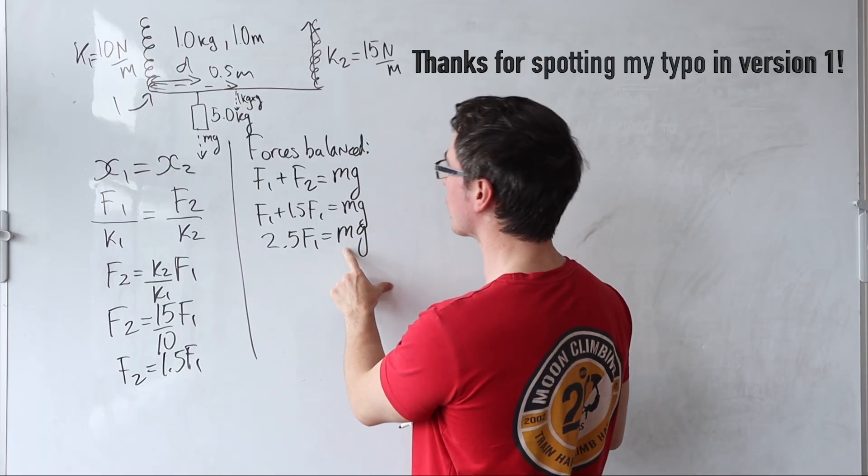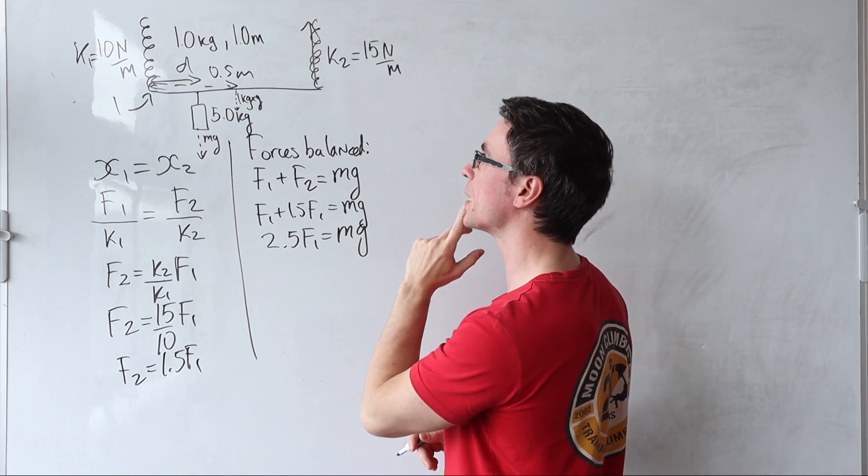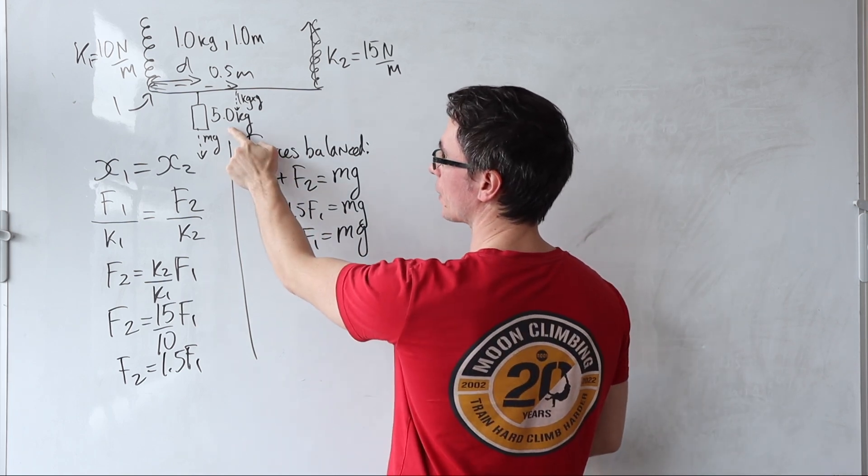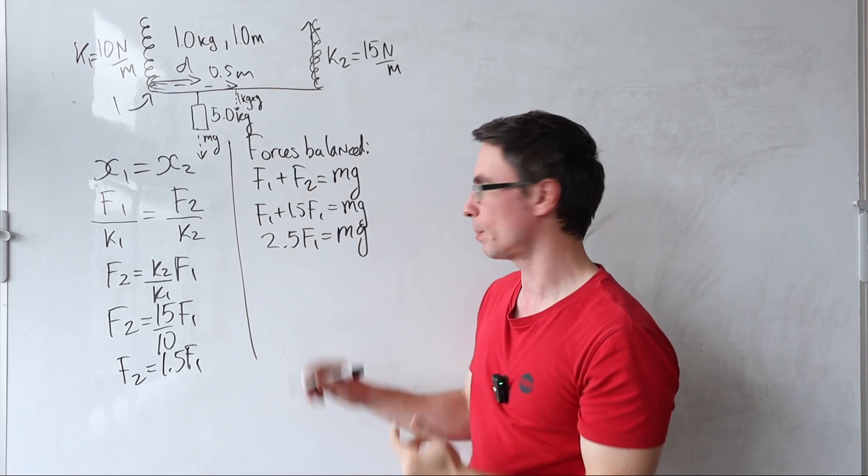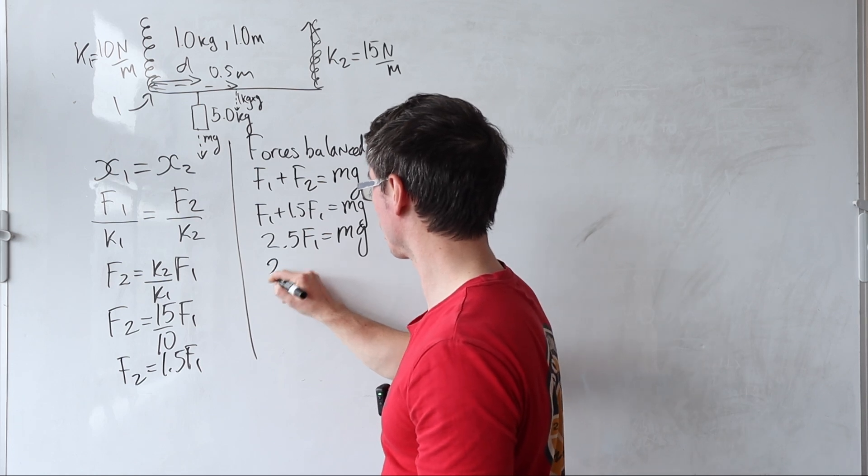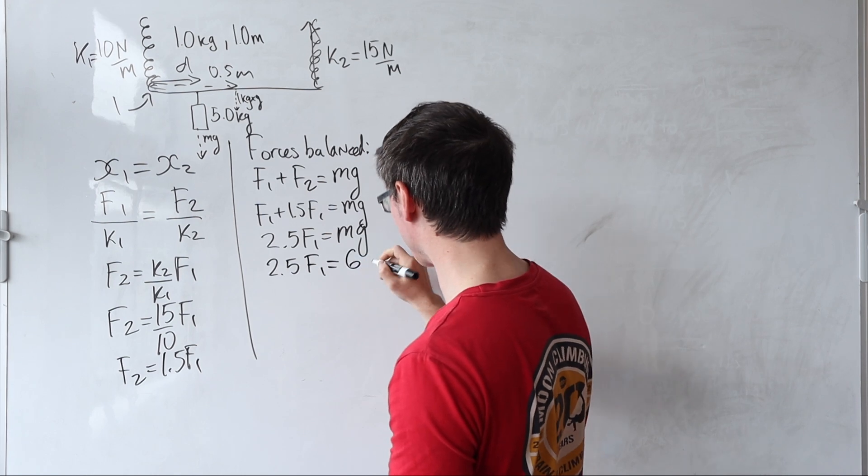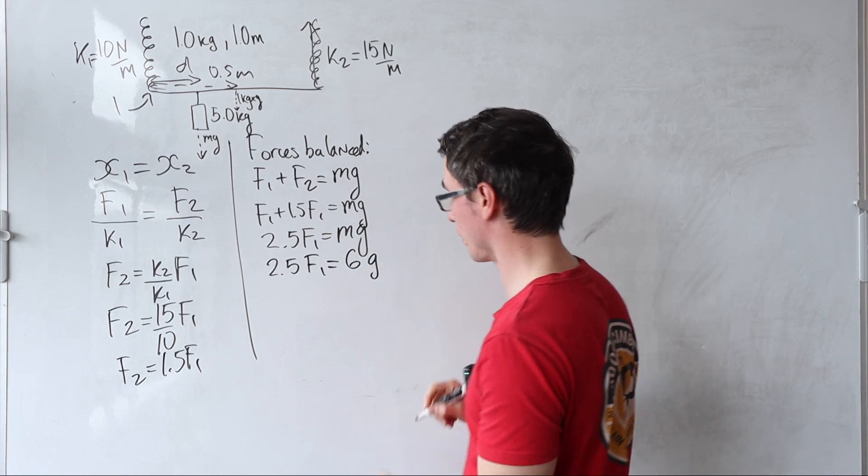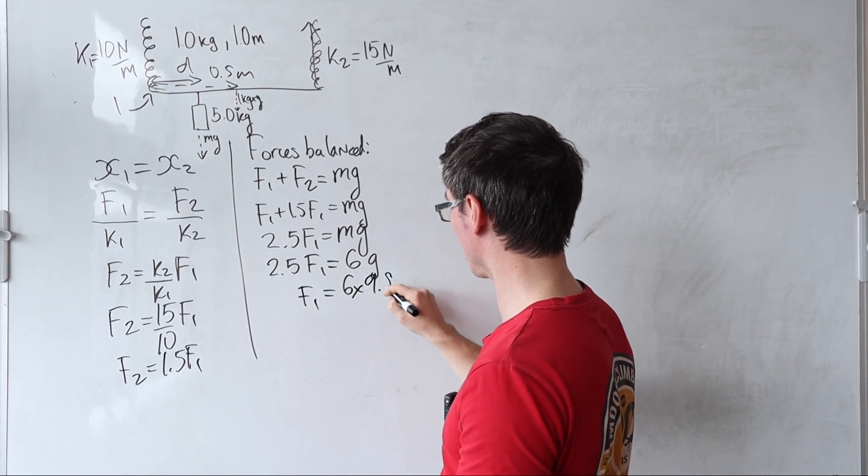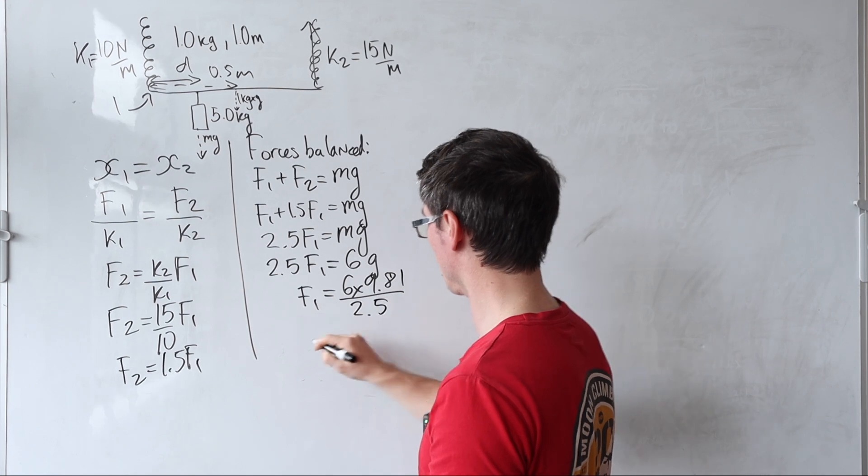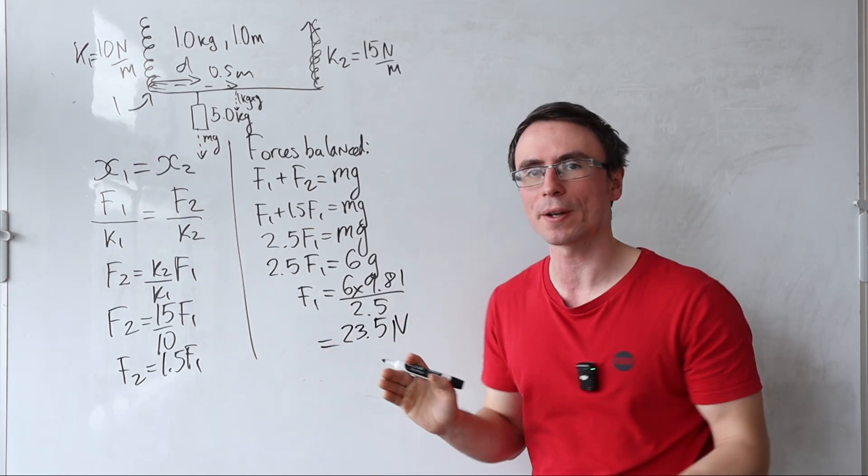Now we have to be careful though, because the total mass going downwards is going to be given by the mass of this added 5 kilogram mass plus the mass of the beam. So we're going to have 2.5 multiplied by f1 will be given by 6 kilograms multiplied by g. In other words, f1 will be equal to 6 times 9.81 divided by 2.5, and this here will give me around 23.5 newtons.